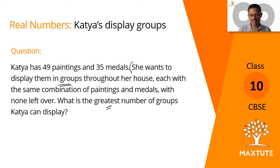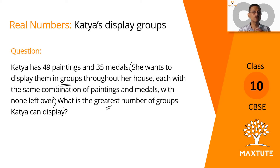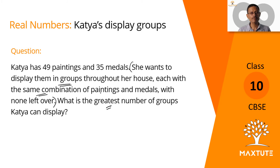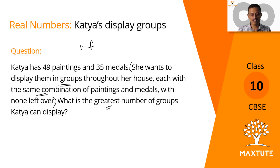Let's go back to the second sentence. She is dividing them — displaying them into groups — which means she is making them into groups or sets such that each has the same combination. So if she's going to divide something, we are talking about factors. So this question is an HCF question.